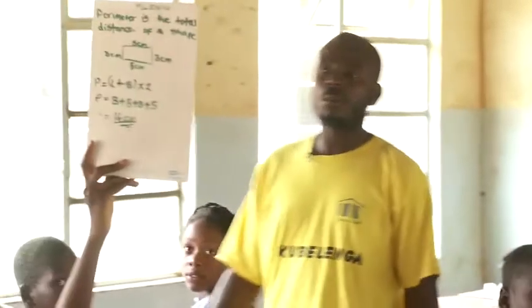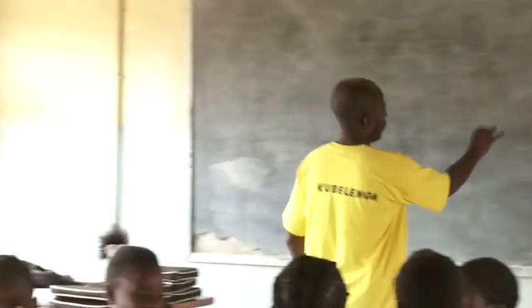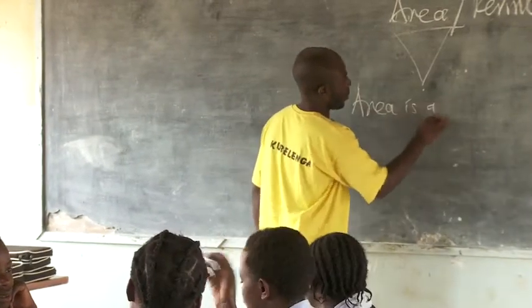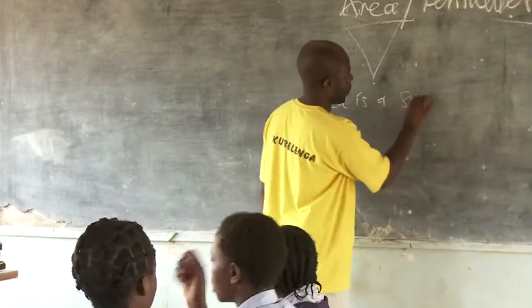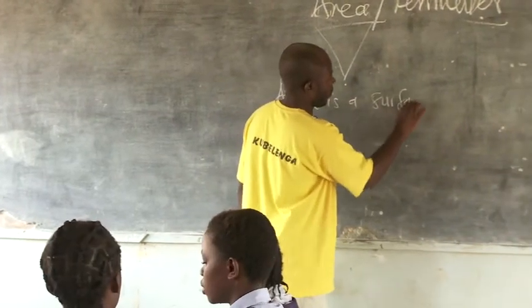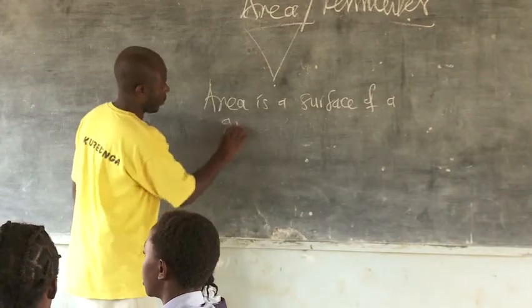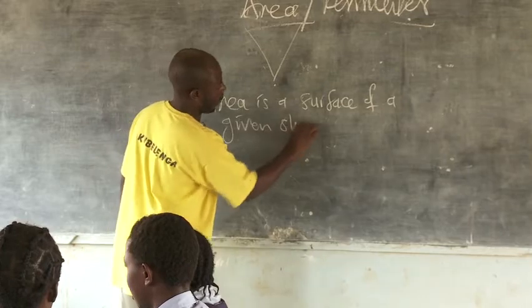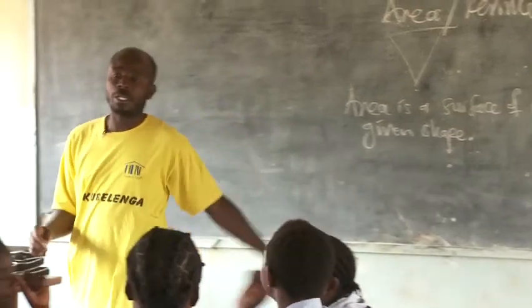What is it written there? Area is the surface of a given shape. Let me write that one here. Area is the surface of a given shape. Now, that's what area is.